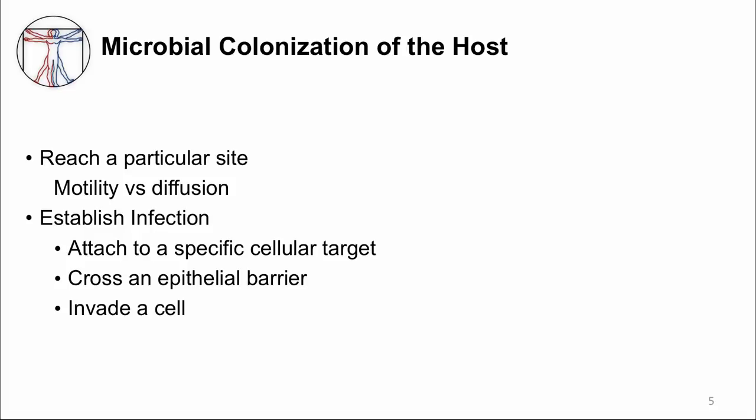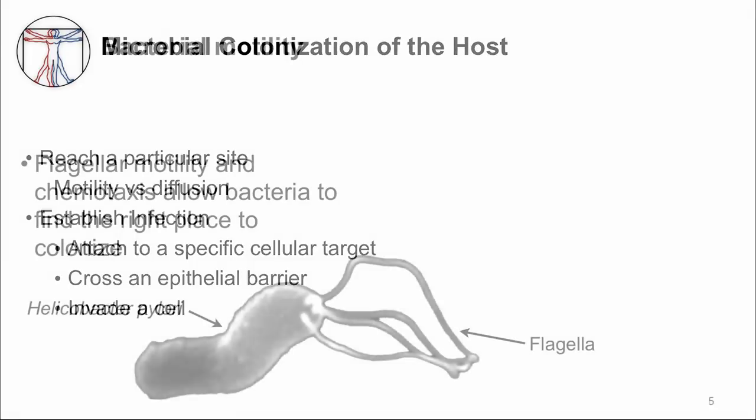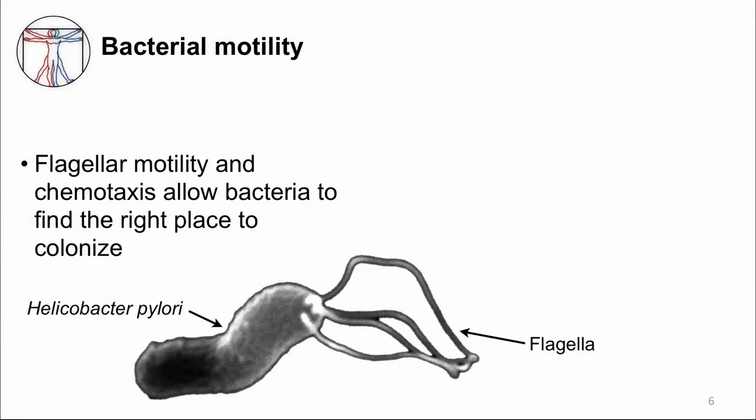I'll give you examples from bacterial, viral, fungal, and parasitic infections. Once a microbe has entered the host, it needs to reach its preferred location. This may involve active motility and sensing by the microbe.